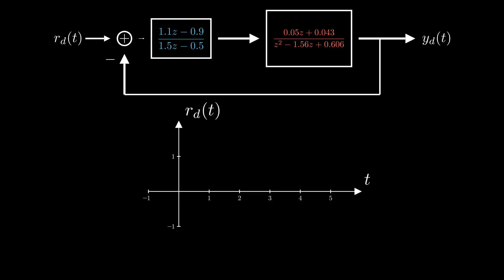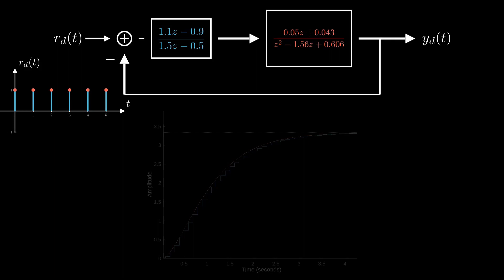And now if we set the discrete step function as our r_D(t) reference signal, the output y_D(t) will have this form. The red line represents the step response of the corresponding analog domain system.